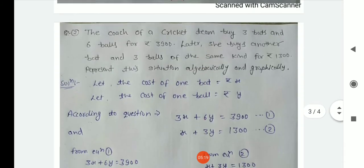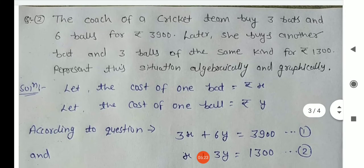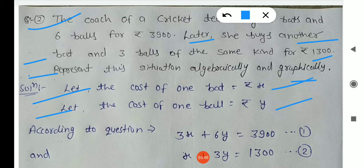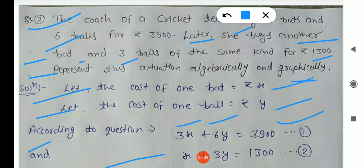Now we discuss question number two. The coach of a cricket team buys 3 bats and 6 balls for rupees 3900. Later she buys another bat and 3 more balls of the same kind for rupees 1300. Represent this situation algebraically and graphically. We let the cost of one bat be X rupees and the cost of one ball be Y rupees. So the equations are: 3X plus 6Y equals 3900 and X plus 3Y equals 1300. These two equations are the algebraic representation.